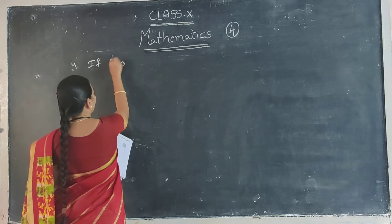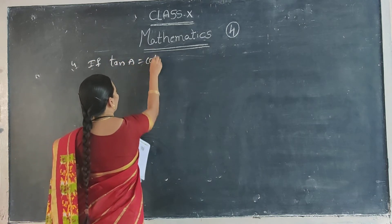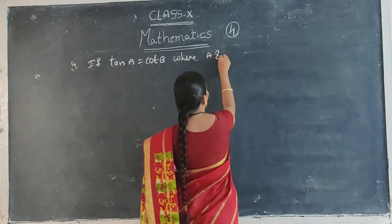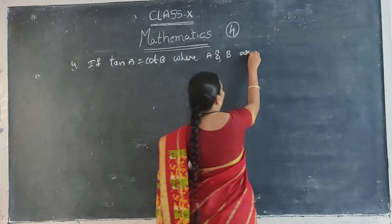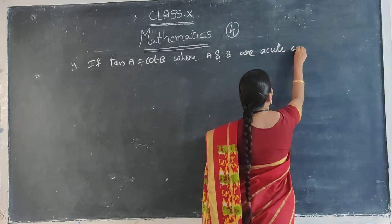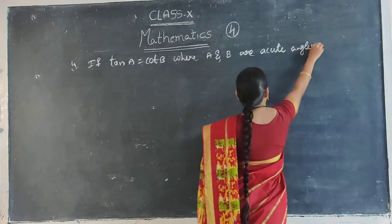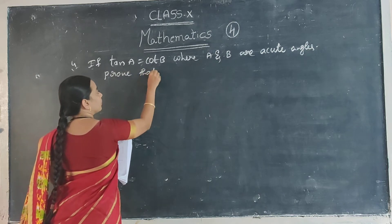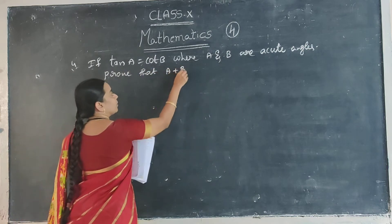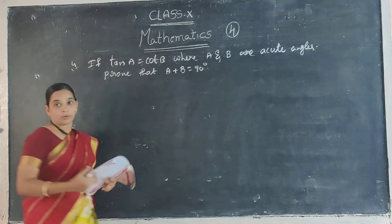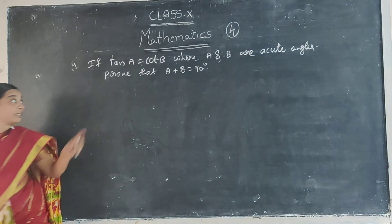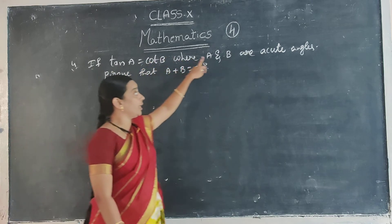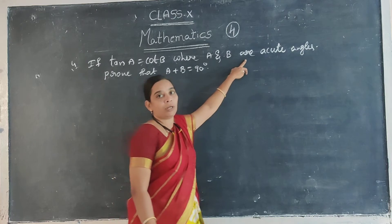If tan A is equal to cos B, where A and B are acute angles, prove that A plus B is equal to 90 degrees. This is the given condition where A and B are acute angles. Acute angles means below 90 degrees.